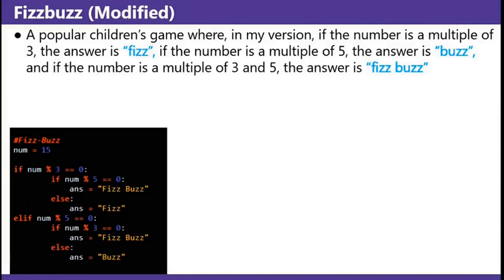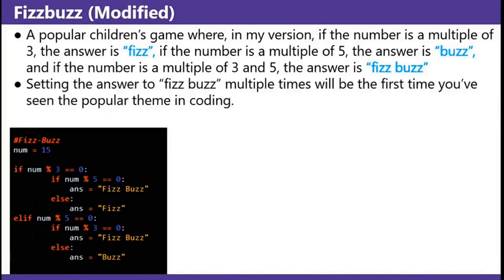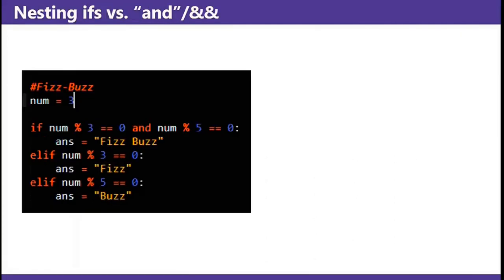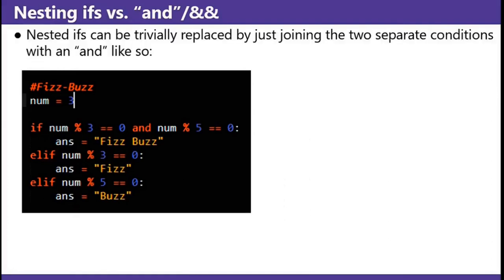FizzBuzz modified: a popular children's game where, in my version, if the number is a multiple of 3, the answer is Fizz; if the number is a multiple of 5, the answer is Buzz; and if the number is a multiple of 3 and 5, the answer is FizzBuzz. Setting the answer to FizzBuzz multiple times will be the first time you've seen that popular theme in coding — if you're copying code, you're probably designing your code poorly. Nesting ifs versus ands: nesting ifs can be trivially replaced by just joining the two separate conditions with an and. In this example, if the number is a multiple of 3 and a multiple of 5, the answer is FizzBuzz. Else if it's a multiple of 3, the answer is Fizz. Else if it's a multiple of 5, the answer is Buzz.